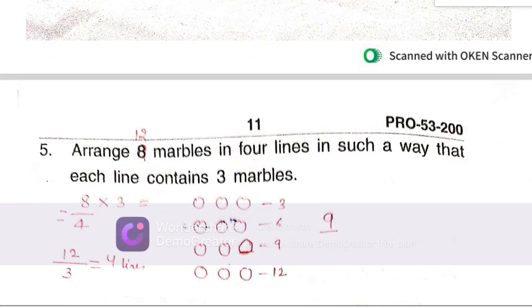Arrange 6 marbles in 4 lines in such a way that each contains 3 marbles. Here are 12 marbles, so you will have 12 marbles and how many lines? 4 lines we will make. 12 divided by 4 is equal to 3, so like this you can solve it.